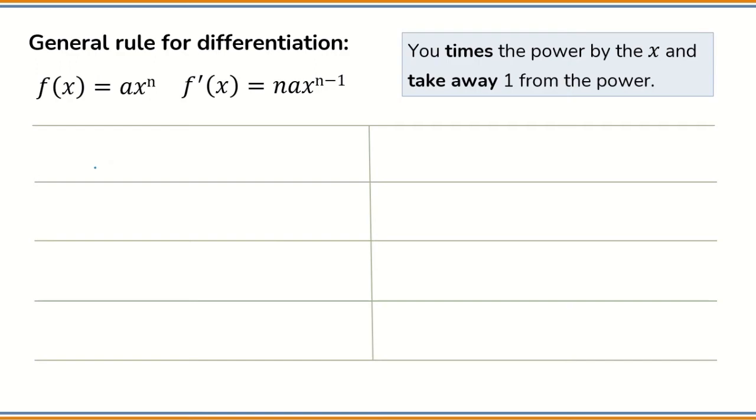How do we differentiate a function? This is the mathematical expression of the general rule. It may seem complicated, but in practice it's not difficult. Let's use an example to understand the rule. We have this function f(x) equals x cubed. If we want to find the derivative of this function, let's have a look at the rule. You times the power by x—the power is 3—you times it by x, and take away 1 from the power. The power is 3. If I take away 1, it's 2. And this is the derivative.